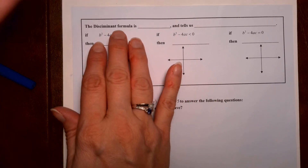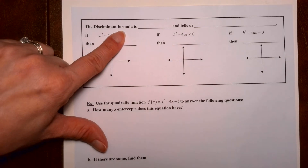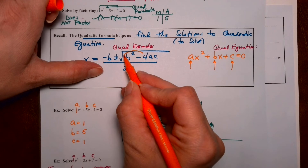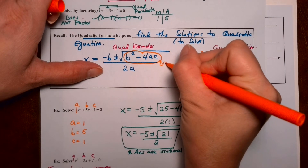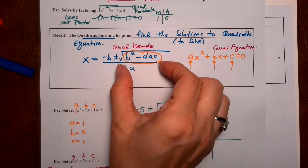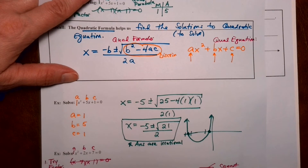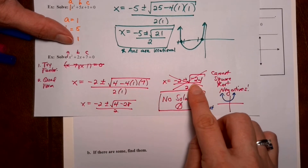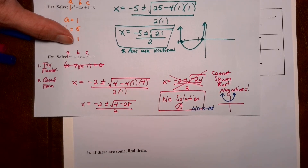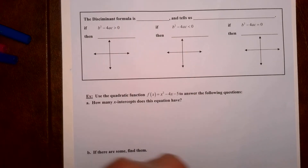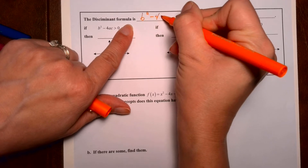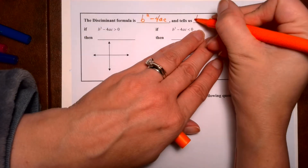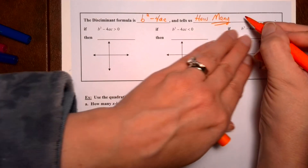The discriminant is kind of a shortcut. The discriminant formula is actually part of the quadratic formula — it's the part right there under the radical: b squared minus 4ac. If you just do that calculation and get a negative, you know right away not to waste your time completing the full formula. So the discriminant formula is b squared minus 4ac, just the calculation under the radical, and it tells us how many solutions there are.